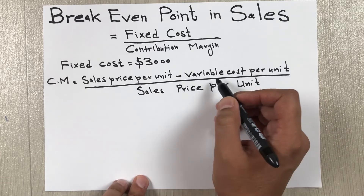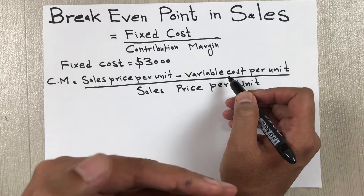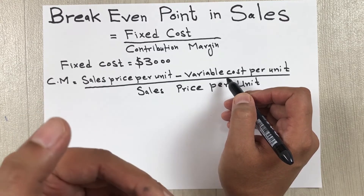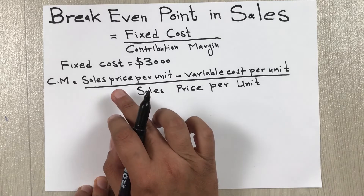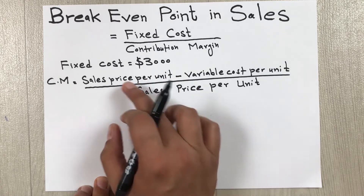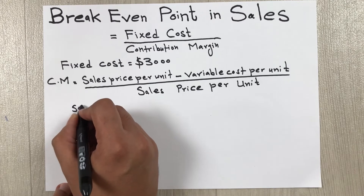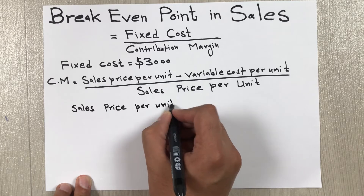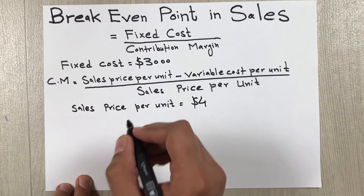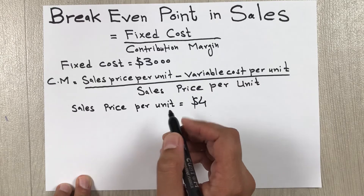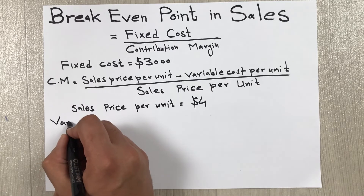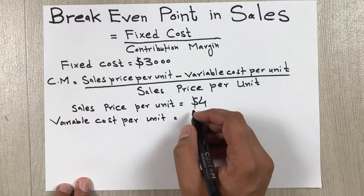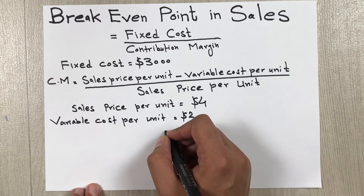Variable cost is the cost that changes according to production and sales. Examples of variable cost are labor and raw material. Let's say the sales price per unit is $4, and variable cost per unit is $2.